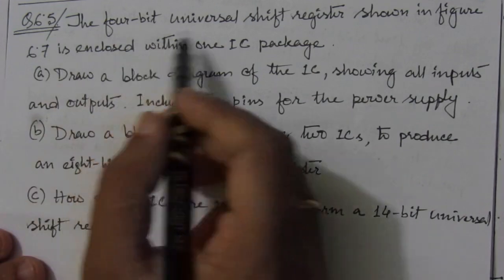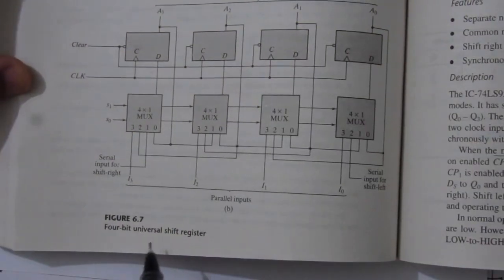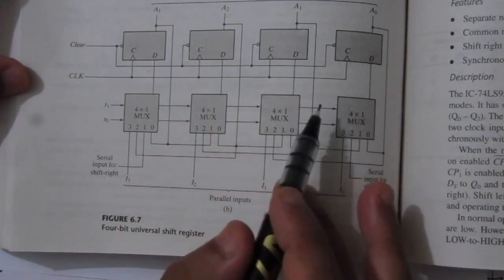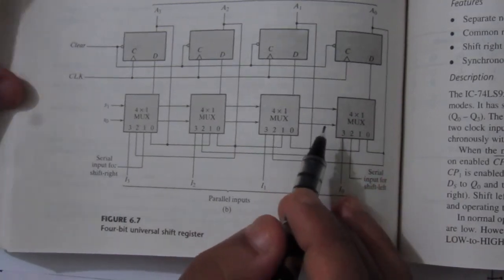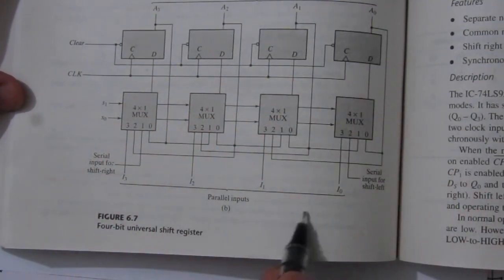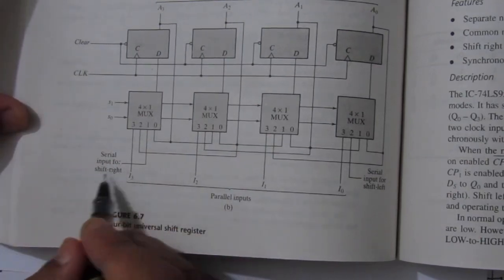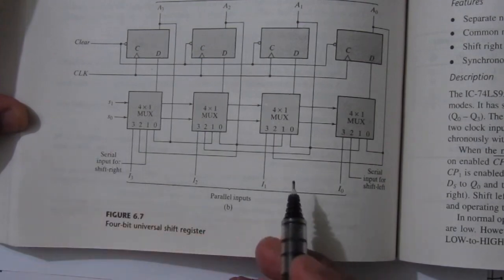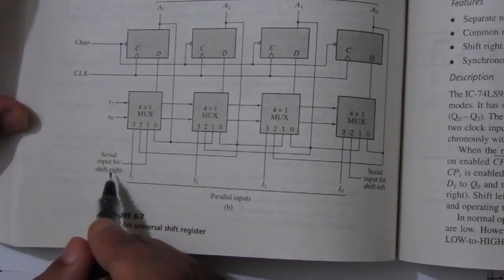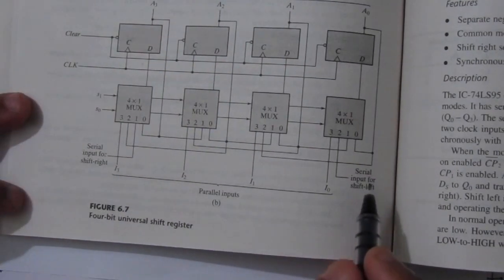The problem involves a 4-bit universal shift register shown in figure 6.7, enclosed within an IC package. We will have 4 parallel outputs, 4 parallel inputs, 1 clock input, and 1 clear input. Since it is a universal shift register, we have serial input for shift right and serial input for shift left. We need to define these ports in the IC.